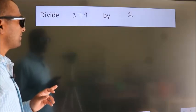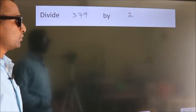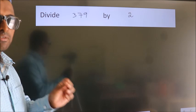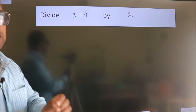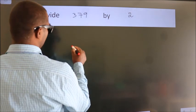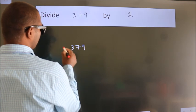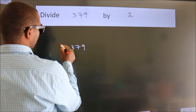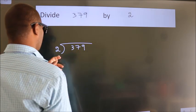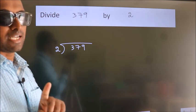Divide 379 by 2. To do this division, we should frame it in this way: 379 here, 2 here. This is your step 1.